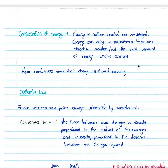When conductors touch, their charge is shared equally. So if you have two metal spheres with different charges and you touch them together, at the end they will both have the exact same charge. You simply add all of your charge together and then divide it by two, and that will be the charge left on each of your metal spheres.